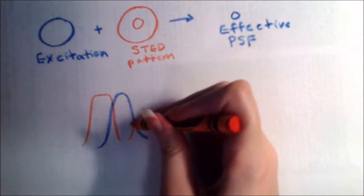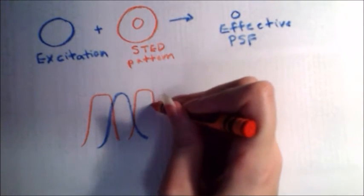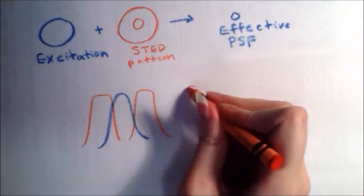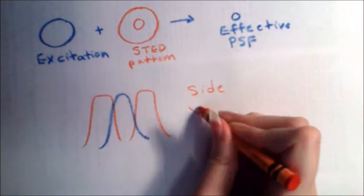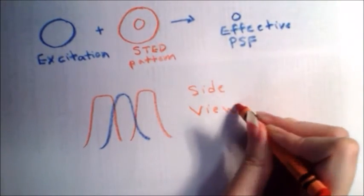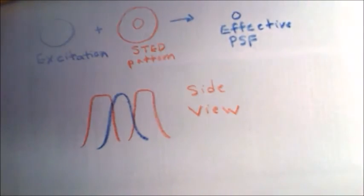When using this process, details as small as 20 to 30 nanometers can be resolved, which accounts for an approximately tenfold improvement in resolution over traditional fluorescence microscopy.